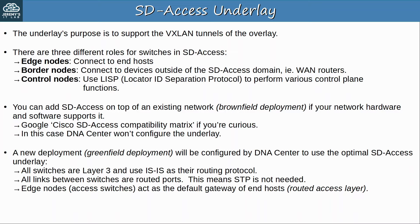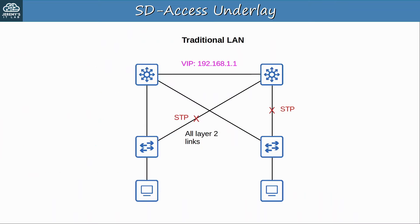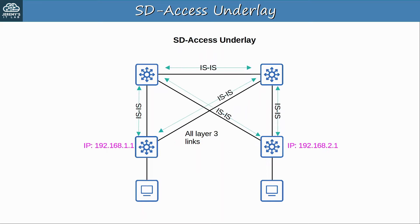Here's a traditional LAN. Notice that STP is used to avoid Layer 2 loops, and an FHRP — for example HSRP — is used by the distribution layer switches to provide a redundant default gateway for the end hosts. To send traffic out of their local network, they will send it to the virtual IP provided by the FHRP, 192.168.1.1. In an SD Access underlay, however, all connections between switches are Layer 3, and IS-IS is used to exchange routing information. STP is no longer needed, and an FHRP isn't needed either. Instead, the access layer switches are the default gateways of the end hosts — now we have a routed access layer.